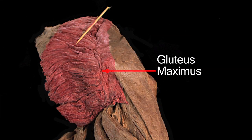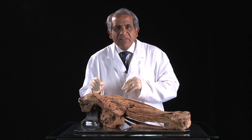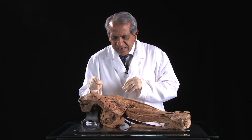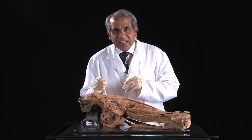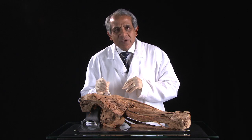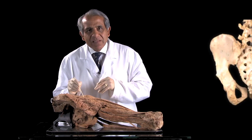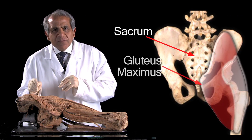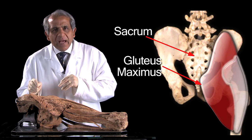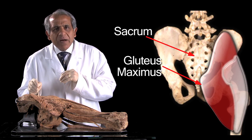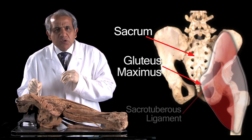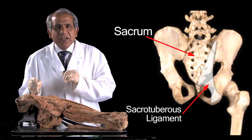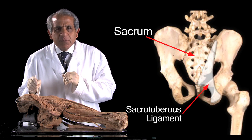Gluteus maximus is packed with coarse fibres running obliquely downwards and laterally behind the hip joint. The muscle arises largely from the back of the sacrum and from the back of a very deeply placed, powerful, strong ligament called the sacrotuberous ligament.